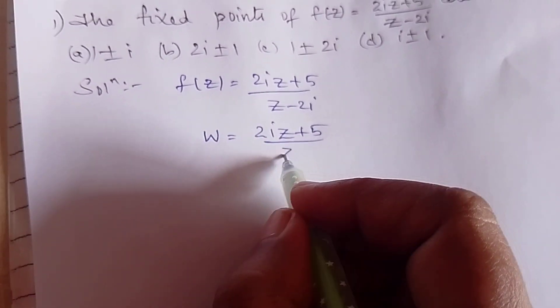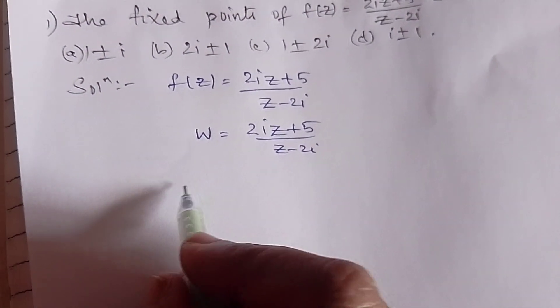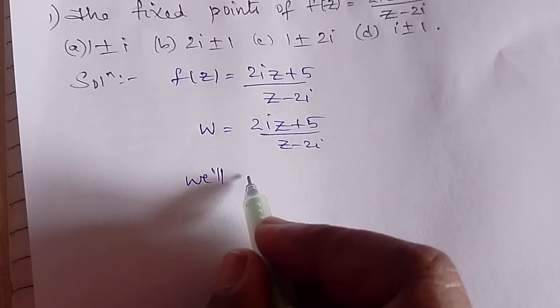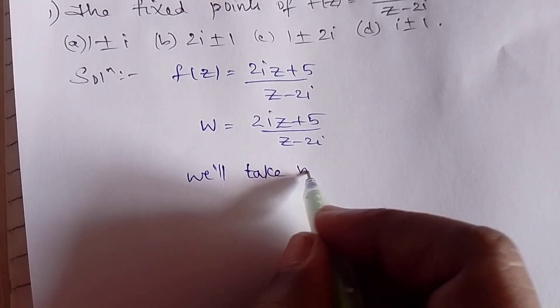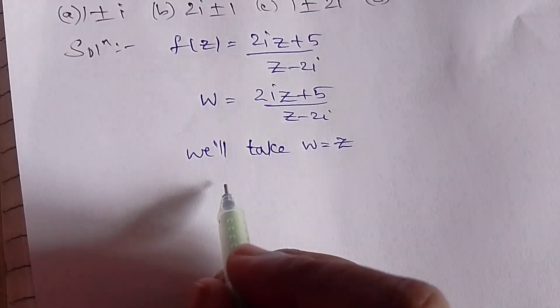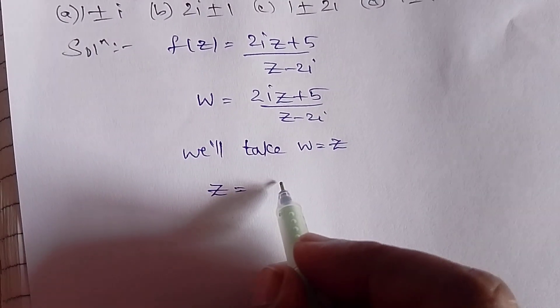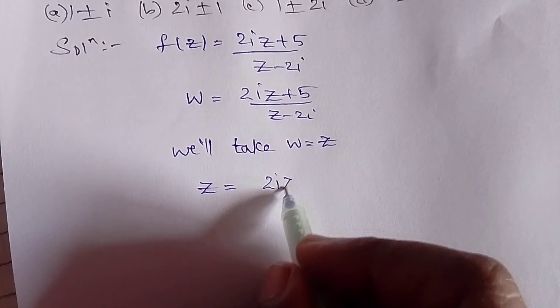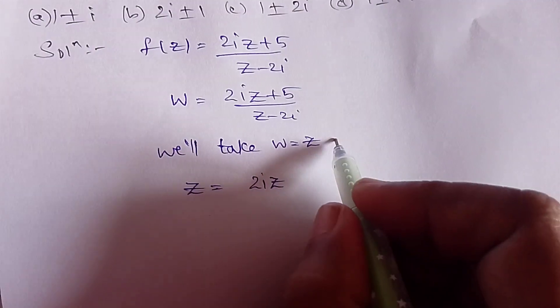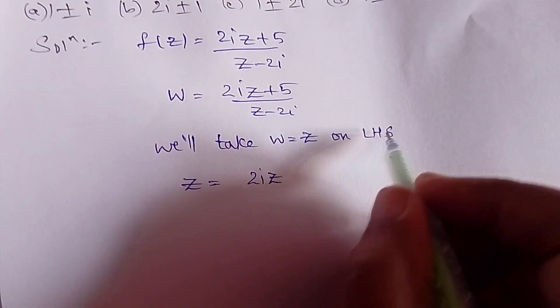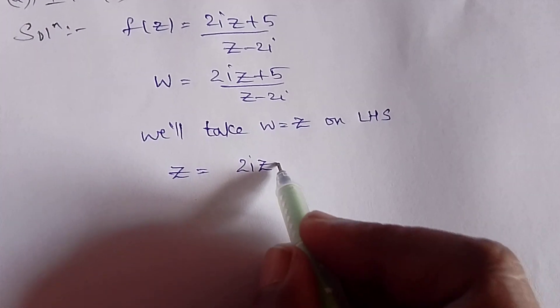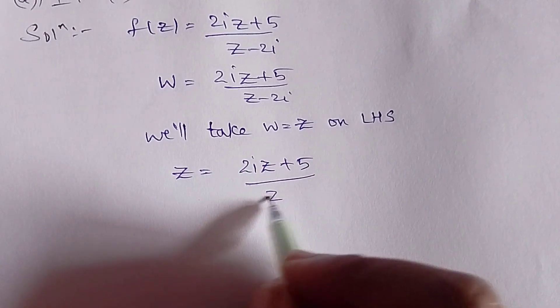In order to find fixed points, we will take w = z. So instead of w, I am writing z on the left-hand side only: z = (2iz + 5)/(z - 2i).